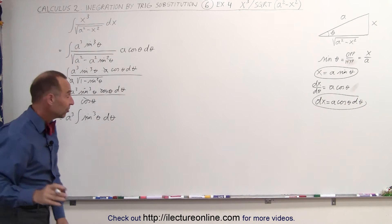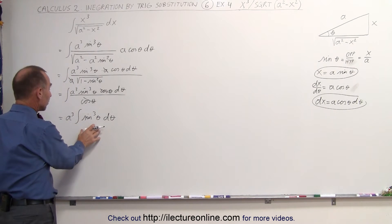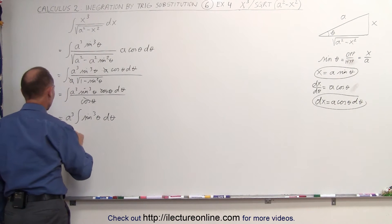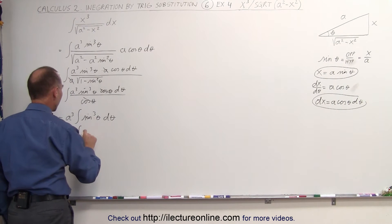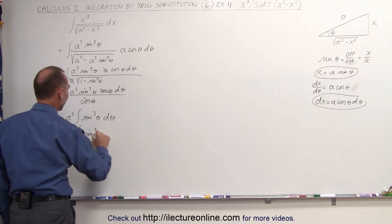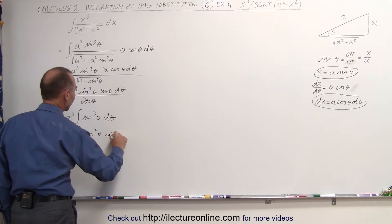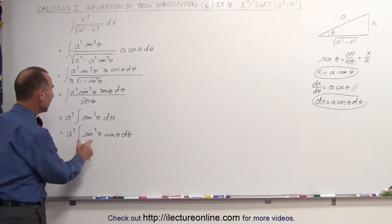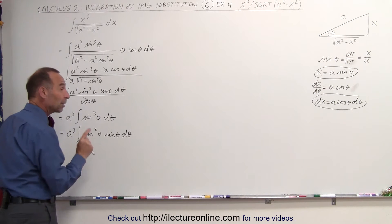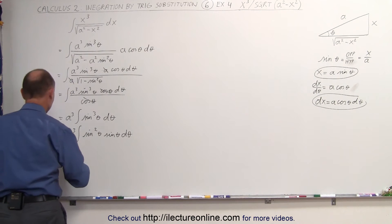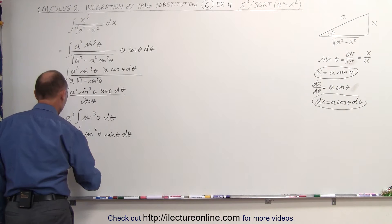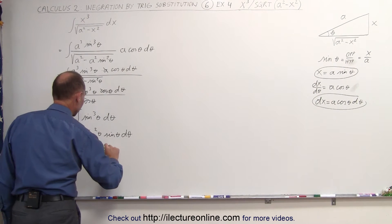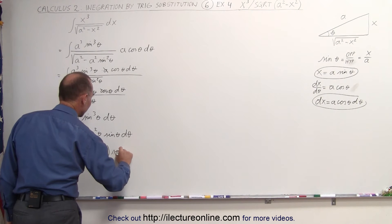Now it becomes an exercise in integrating sine cubed of theta. This can be written as a cubed times the integral of sine squared of theta times sine of theta d theta. The reason we do that is because sine squared of theta can be written as 1 minus cosine squared of theta. This is then equal to a cubed times the integral of 1 minus cosine squared of theta times sine of theta d theta.